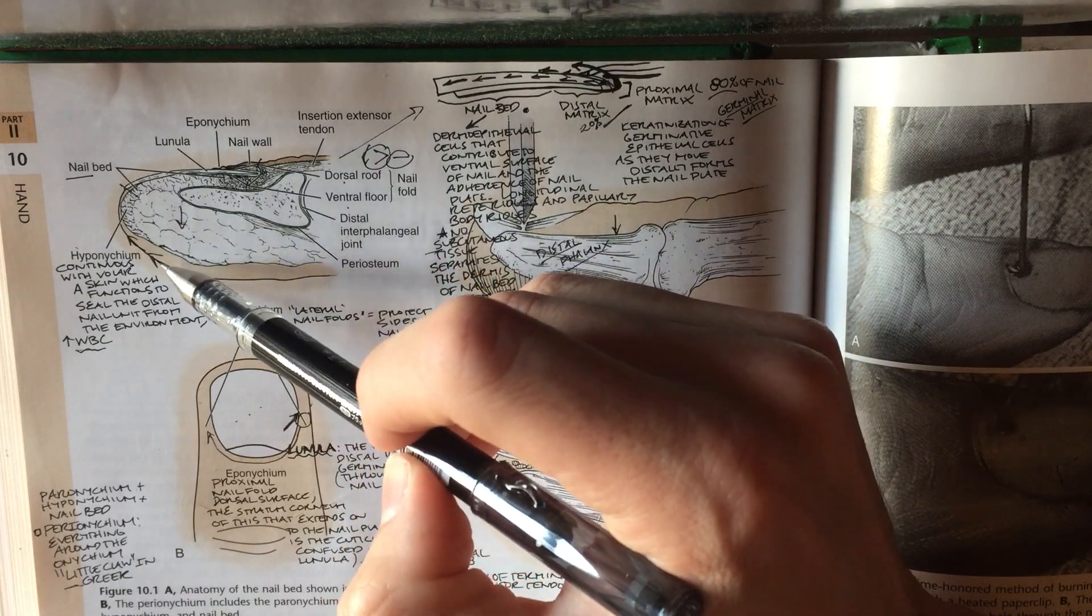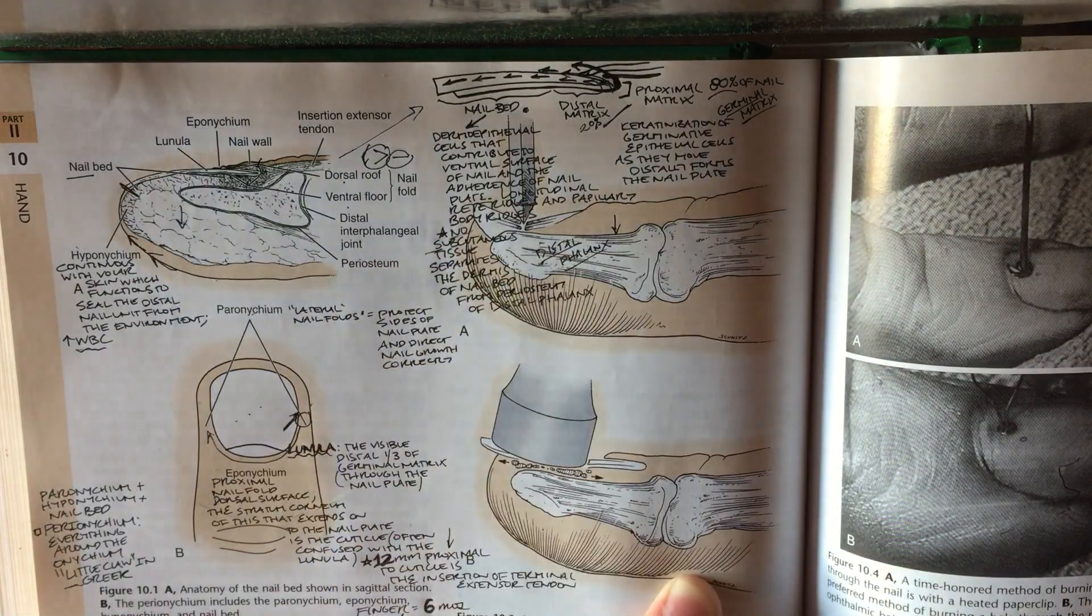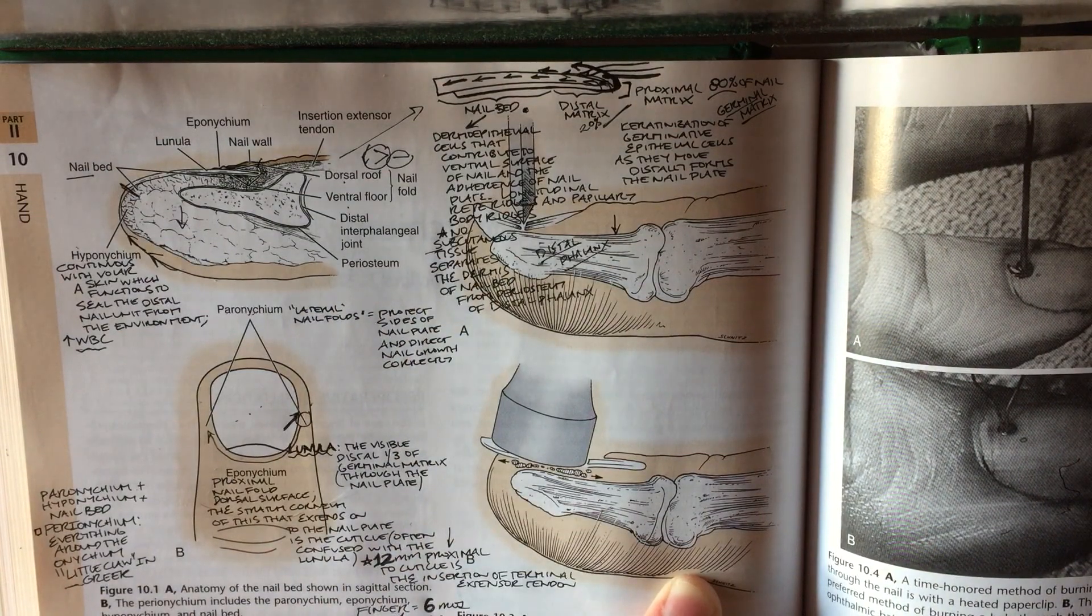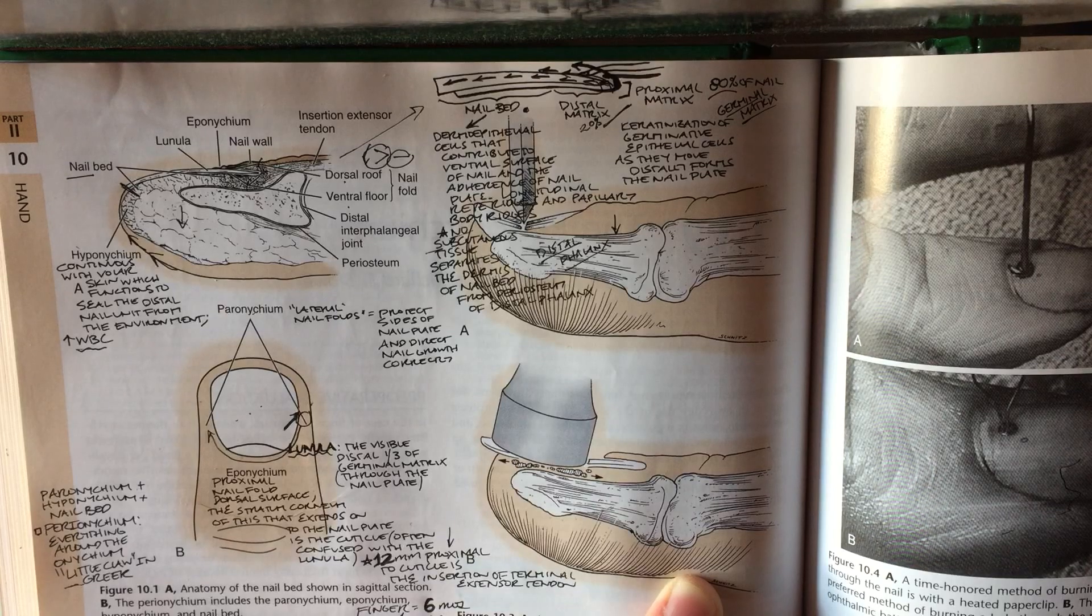the nail, because it's a continuation of the volar skin that's supposed to form a seal here at the nail plate and seal off the nail bed or sterile matrix, preventing any pathogens from entering, therefore making it sterile.